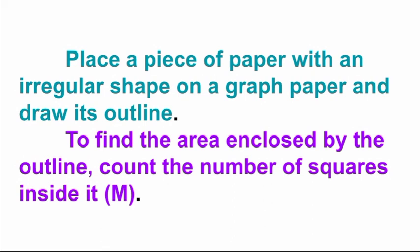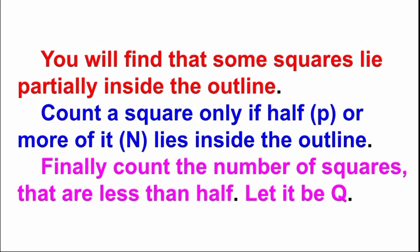To find the area enclosed by the outline, count the number of full squares inside it — let it be M. Count the number of squares more than half inside the outline — let it be N. Count the number of squares that are exactly half — let it be P. Finally, count the number of squares that are less than half — let it be Q.